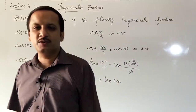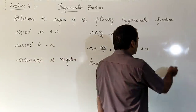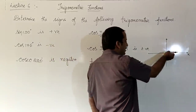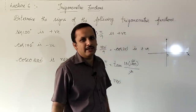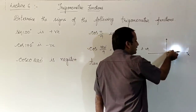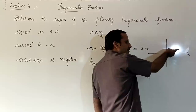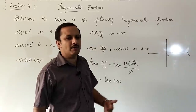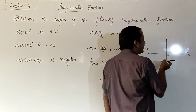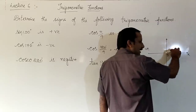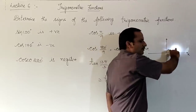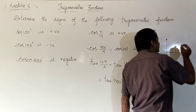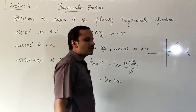780 degrees is greater than 360. The initial line is the positive x-axis. To measure 780 degrees, we cover one full circle (360 degrees), then another full circle (720 degrees), and then move another 60 degrees. So the position corresponds to 60 degrees. The value of tan 780 degrees equals tan 60 degrees, because the position of the point on the circle is the same.